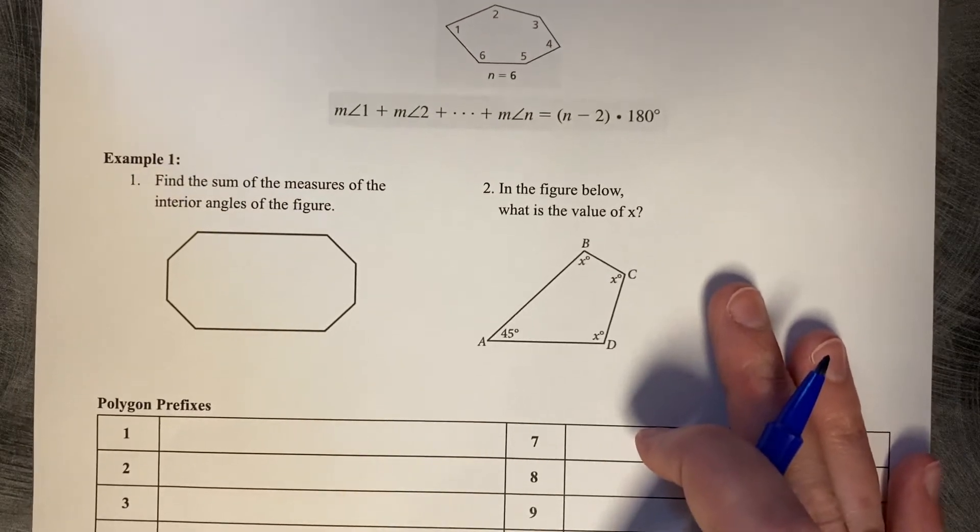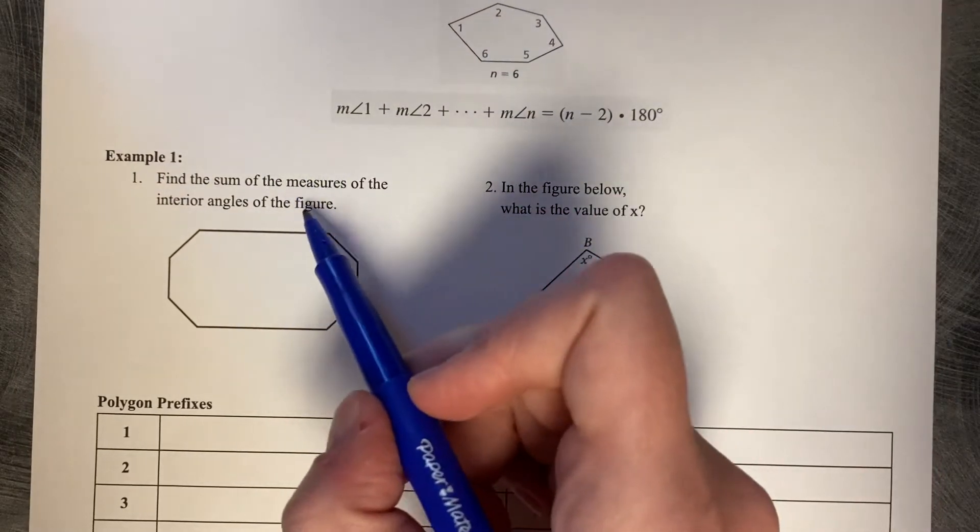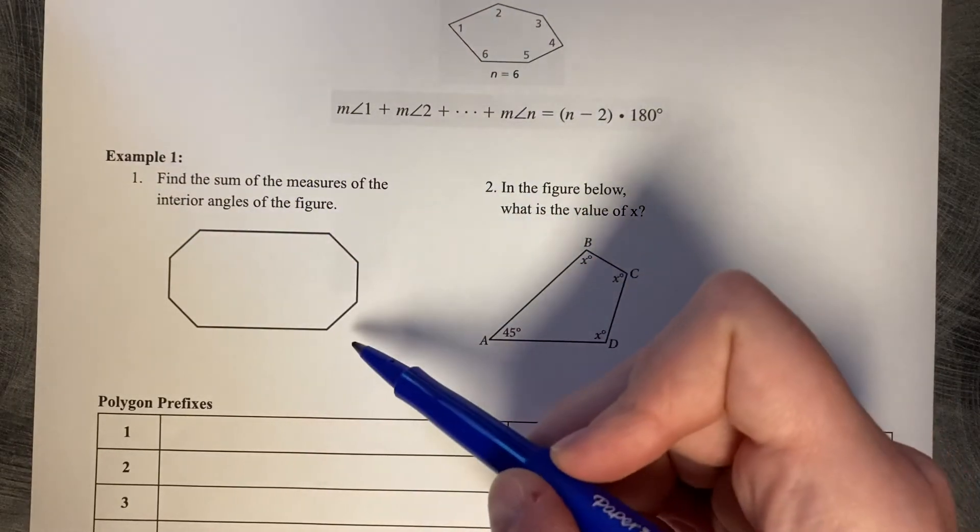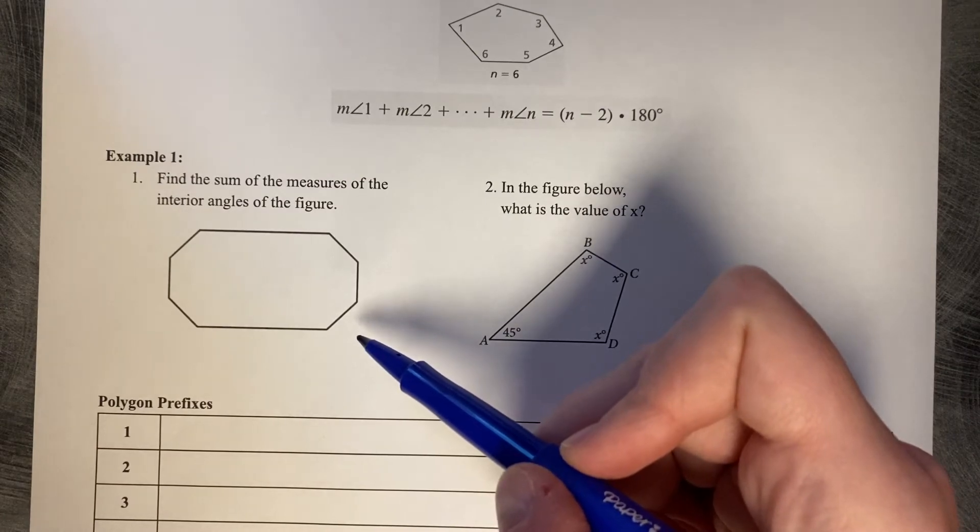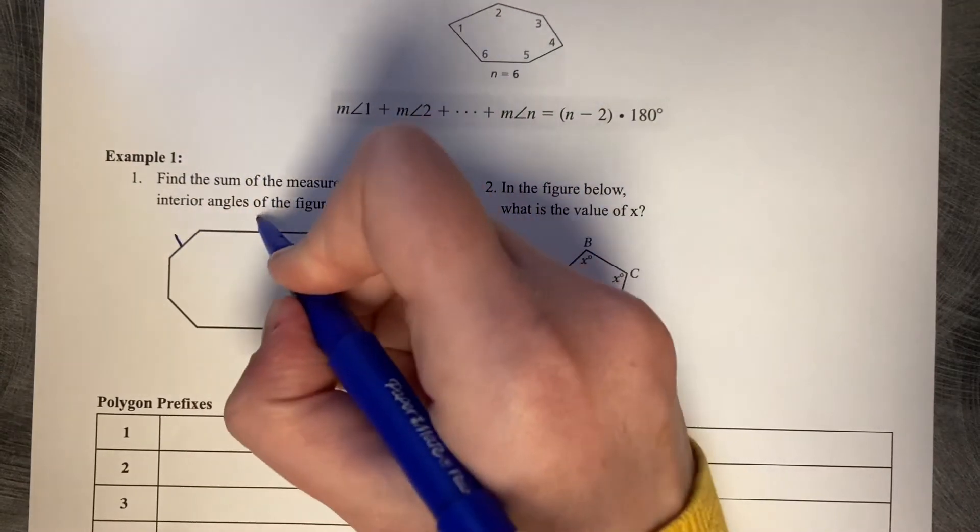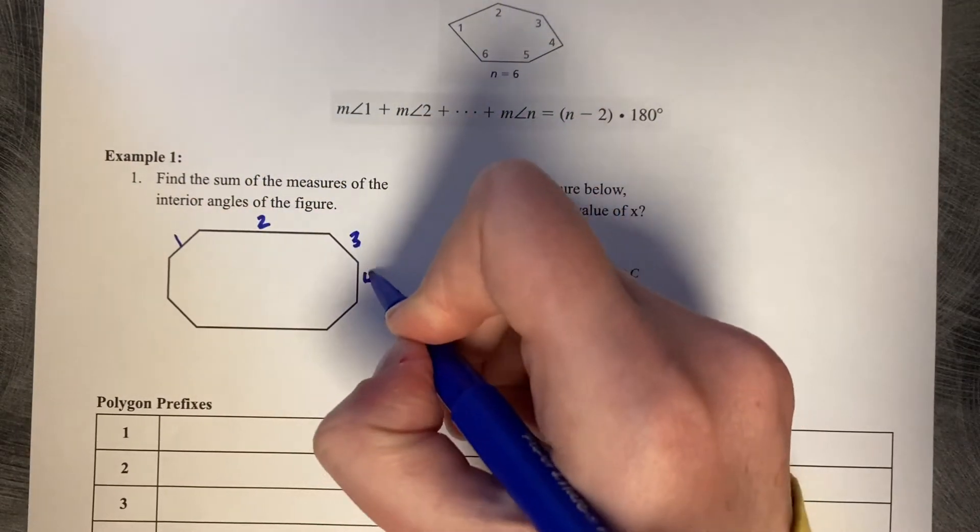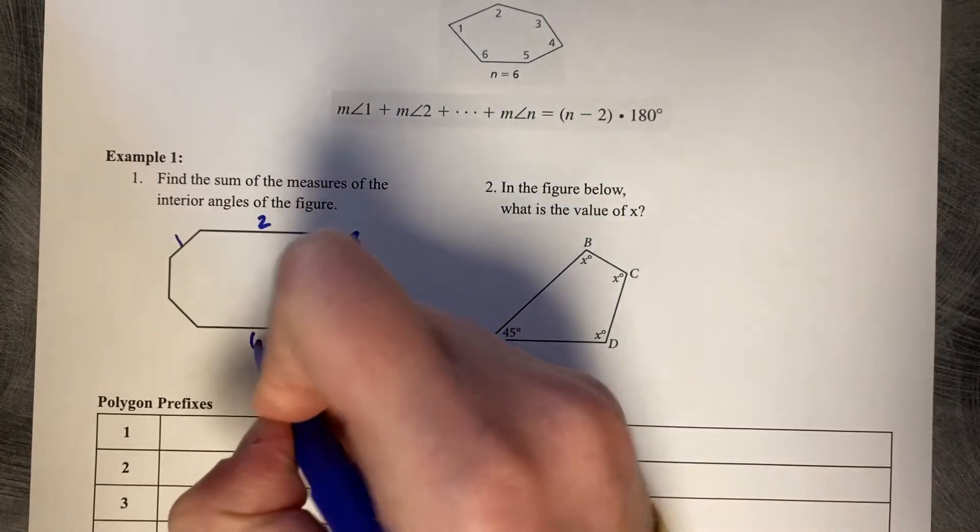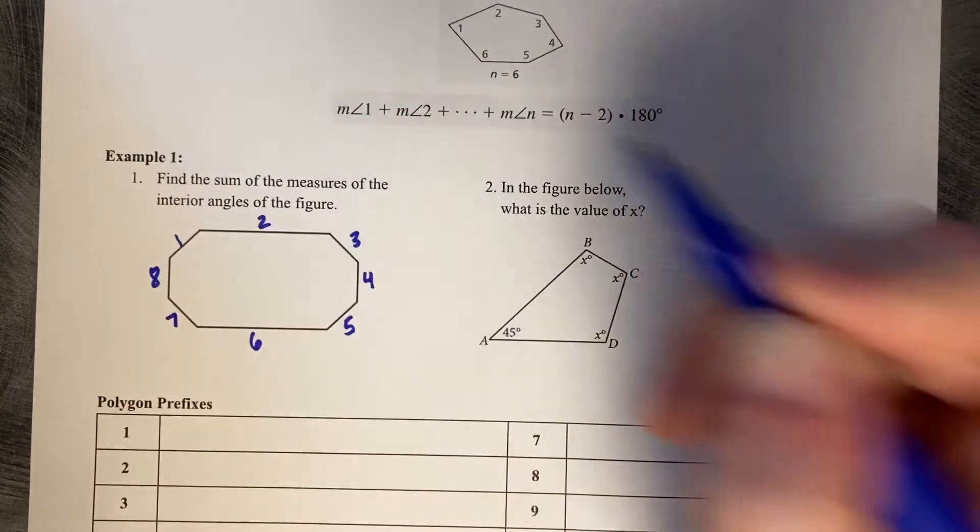So let's do the examples here. Find the sum of the measures of the interior angles of the figure. First, we need to know what kind of figure it is by asking ourselves how many sides does it have? One, two, three, four, five, six, seven, eight.